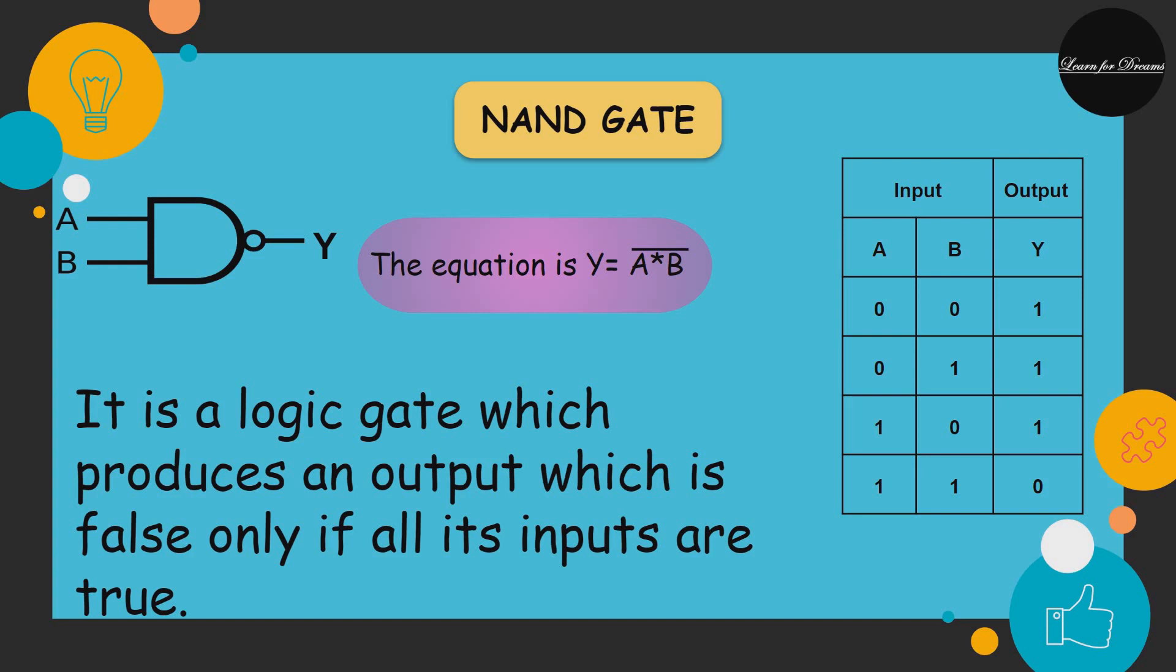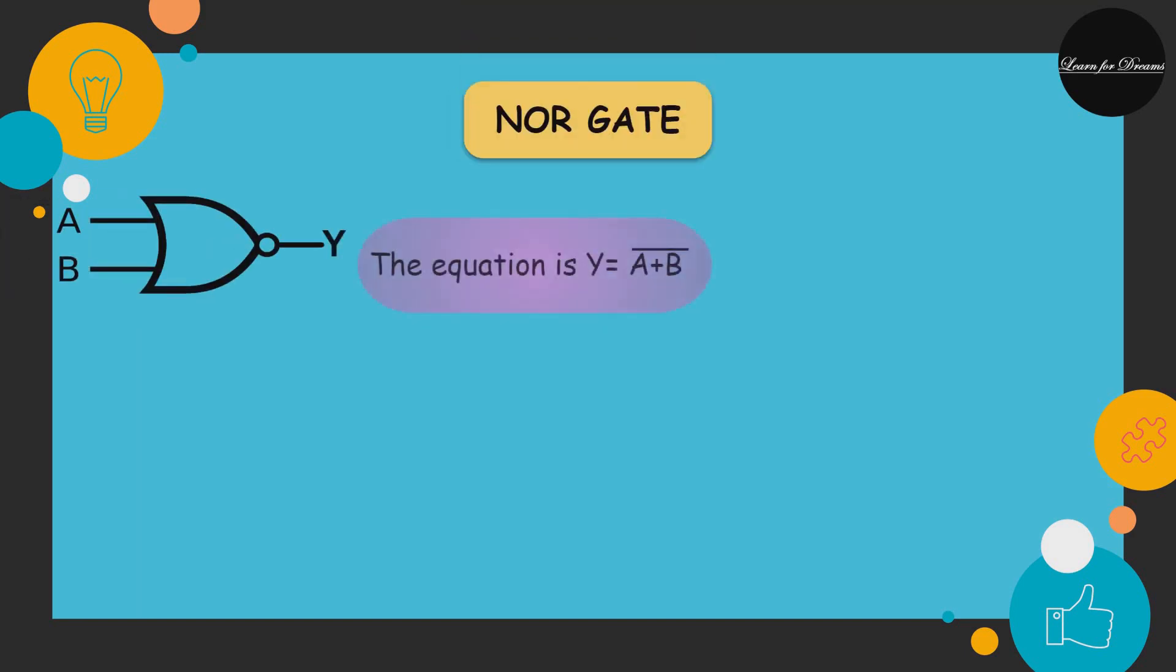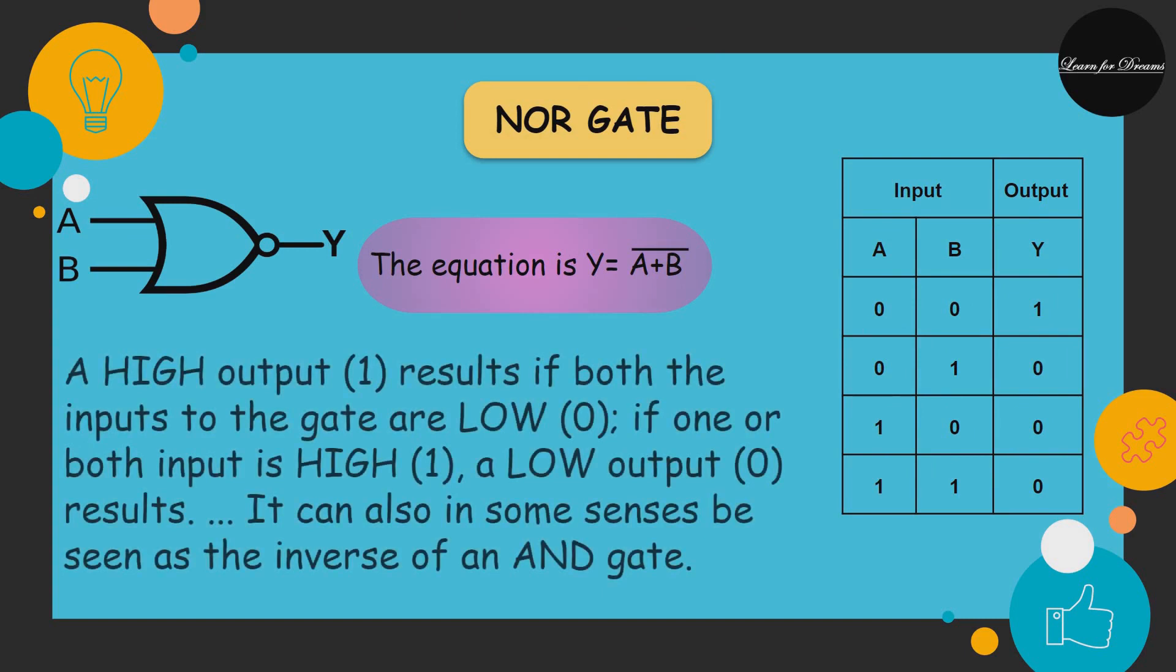The NOR gate is a digital logic gate that implements logical NOR. It behaves according to the truth table. A high output results if both the inputs to the gate are low. If one or both inputs is high, then the output will be low. We can say it is the inverse of an OR gate. The NOR gate is a universal gate.